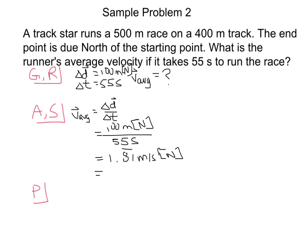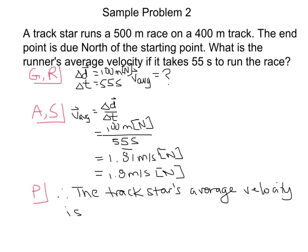And if I'm going to consider significant figures here, we know a track length is generally pretty accurate. So let's go with two significant figures for our answer. So we get 1.8 meters per second north. So this is what has to go in our therefore statement. So therefore, the track star's average velocity is 1.8 meters per second north.